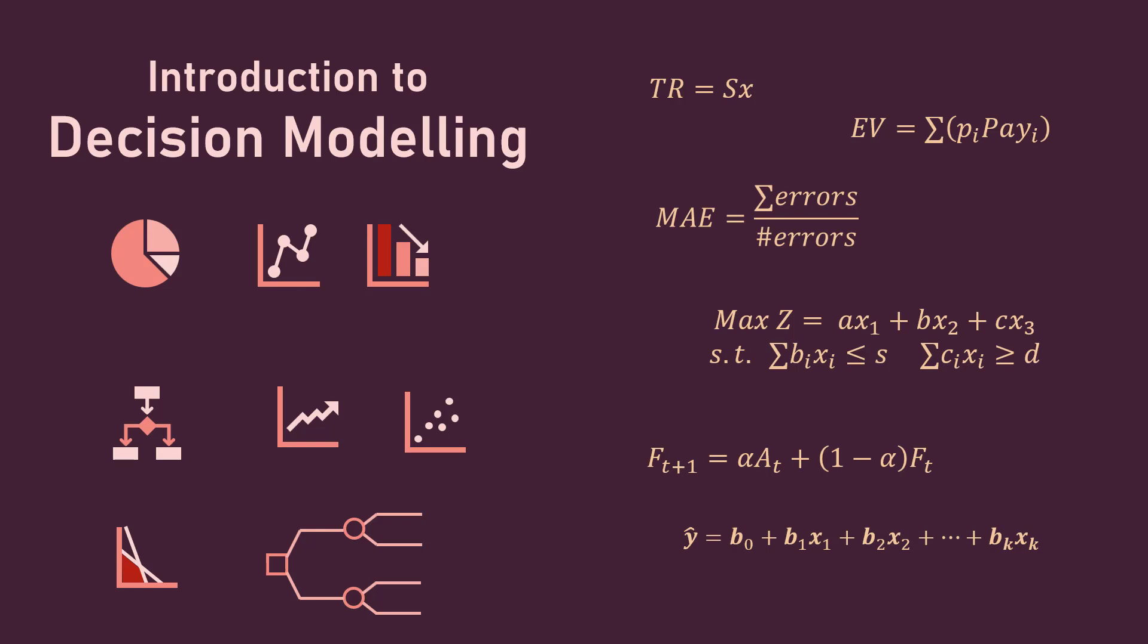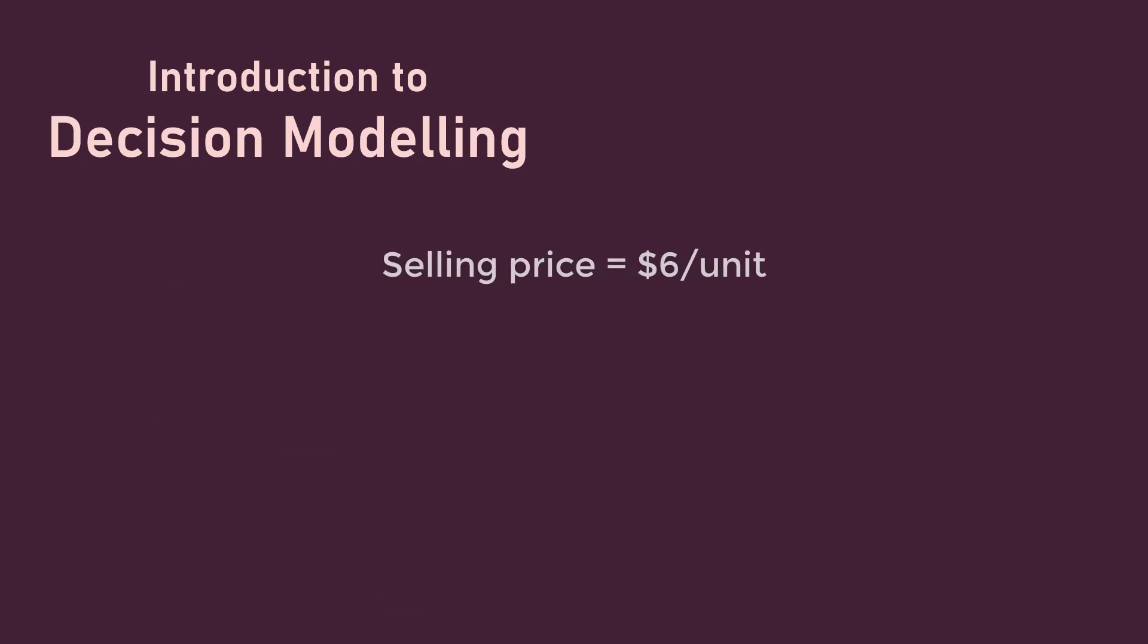Suppose a business sells its products at $6 per unit. Then their total revenue can be written as TR = 6x, where x is the number of units sold. This is a mathematical model which we will refer to as a decision model because it can provide insights into solving decision problems that the business might face.